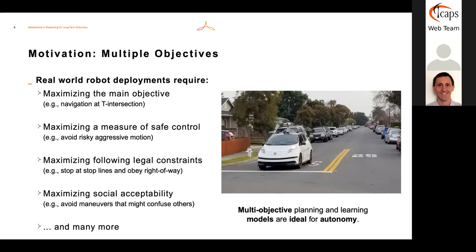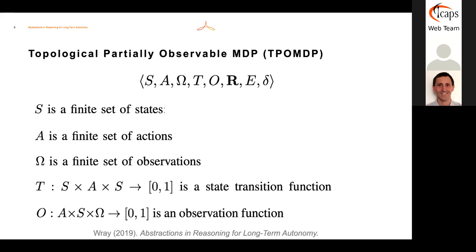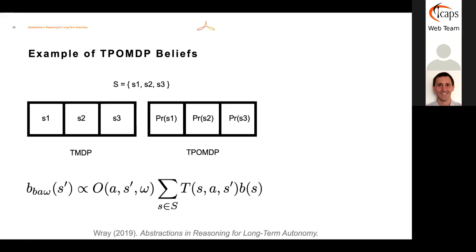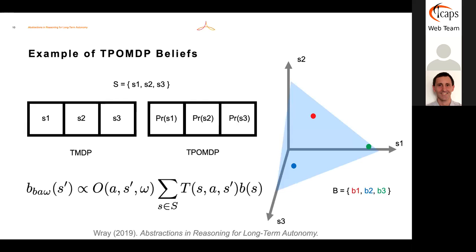Really what we need is multi-objective planning and learning models for this type of autonomy. Part of the dissertation covered a topological POMDP, which is an extension of a classical POMDP. In a classical MDP, you have states and you're certain about which state you're in. In POMDPs, we have a distribution over the true state—a belief—which we update with essentially Bayes' rule or particle filters. In three dimensions like this simple grid world, we can visualize the belief space as an n-minus-one simplex where each point is a possible belief.